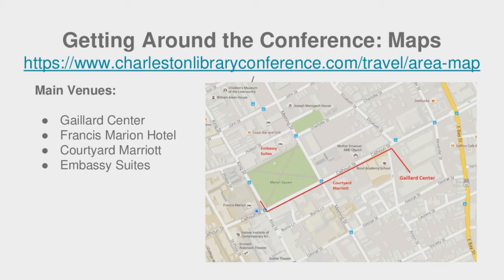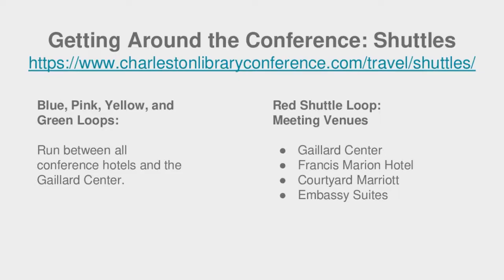The Gaillard Center has its own green space out front with a little arch, walkway, and gardens — it's a very nice, safe, downtown touristy area. We do have shuttles if needed. The shuttle loop information is available on our website. We have four color-coded loops running between all the conference hotels and the Gaillard Center and Francis Marion. The red shuttle loop will run constantly between the four meeting venues: the Gaillard Center, Francis Marion, Courtyard Marriott, and Embassy Suites. The blue, pink, yellow, and green loops run from your hotel in the morning and evening.